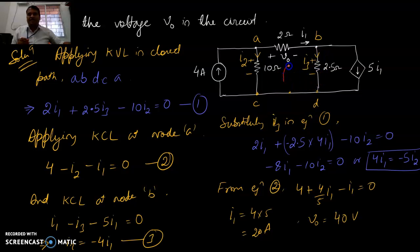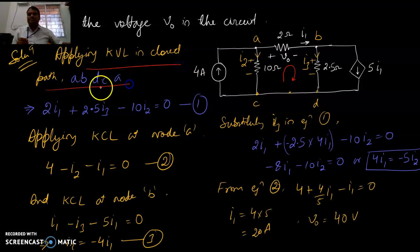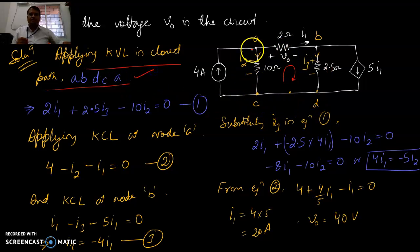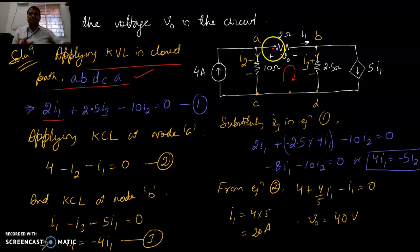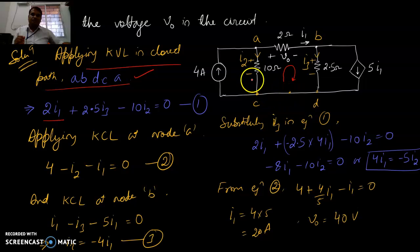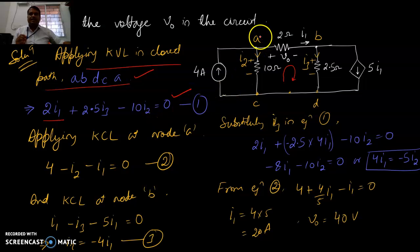Now apply KVL across the closed path A-B-C-D-A. You get: plus 2I1 (because the current is 2I1 with a plus sign), then plus 2.5I3, then you encounter minus first so minus 10I2 equals zero. The first equation is done.